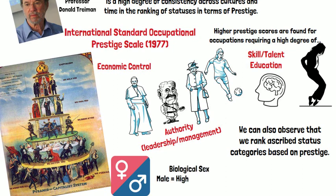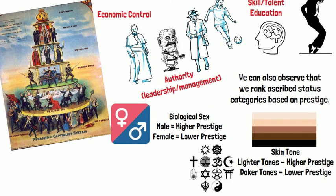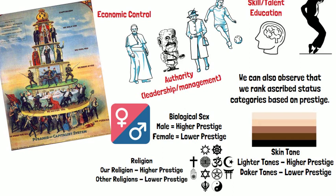A few examples of ascribed statuses ranked by prestige: biological sex — males generally have higher prestige and females lower prestige. Skin tone — lighter tones have higher prestige than darker tones. And religion — we tend to view our own religion as having higher prestige and rank other religions as having lower prestige.